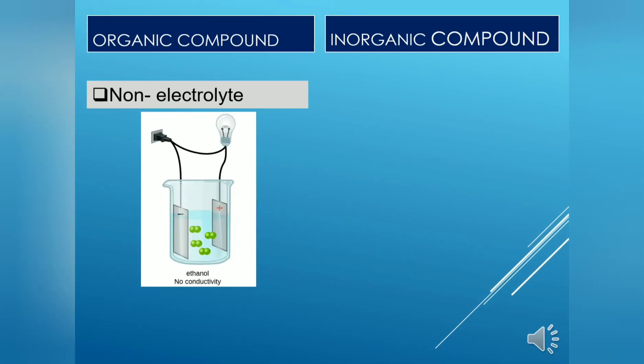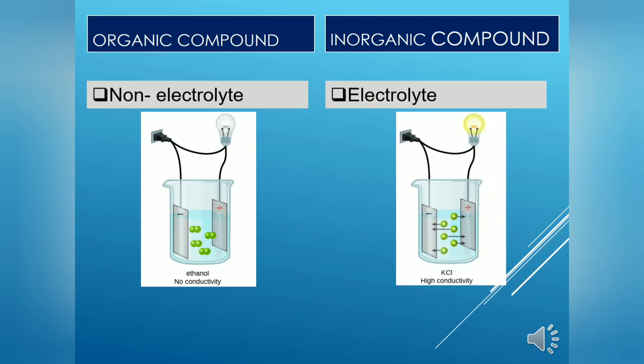Organic compound is not an electrolyte because there are no free-moving ions. Whereas inorganic compound is an electrolyte — meaning it can conduct electricity because it has free-moving ions in its aqueous state.